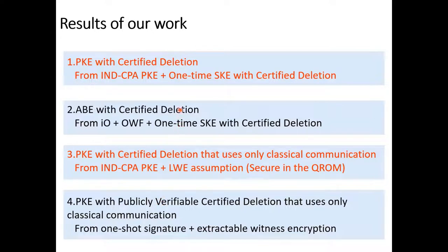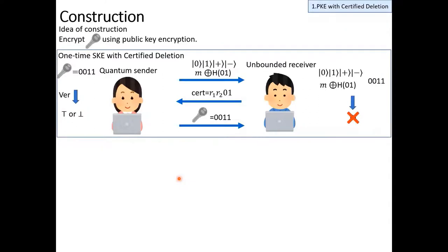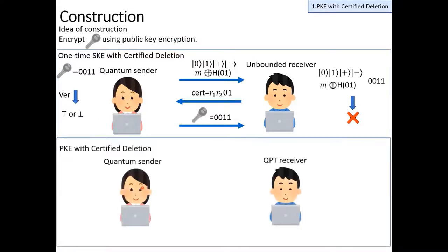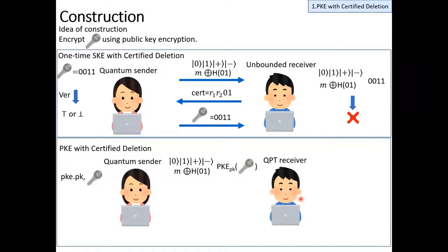First, I talk about public key encryption with certified deletion. We have constructed public key encryption with certified deletion, using public key encryption and secret key encryption with certified deletion as building blocks in a black-box way. For ease of explanation, I will explain a specific construction. The idea of our construction is very standard: to encrypt a secret key using public key encryption. First, the sender receives a public key and generates a secret key, which is the same as this secret key. Then, using this secret key, she generates a quantum ciphertext. At the same time, she also encrypts this secret key using public key encryption. These are the ciphertexts of our construction.